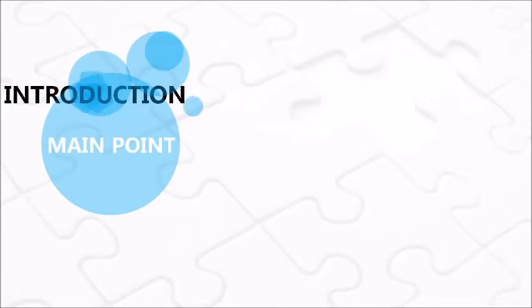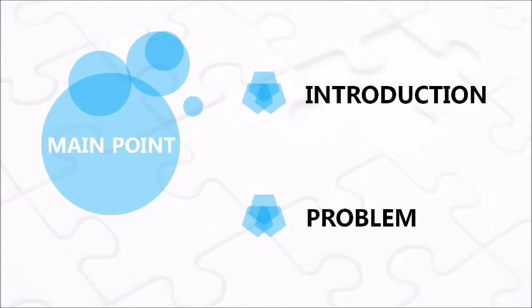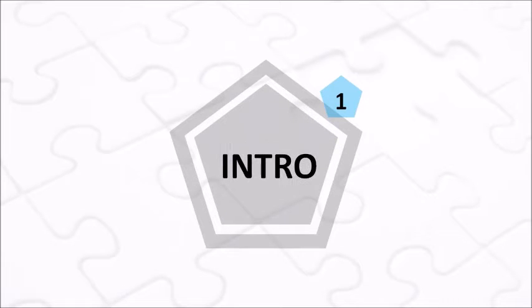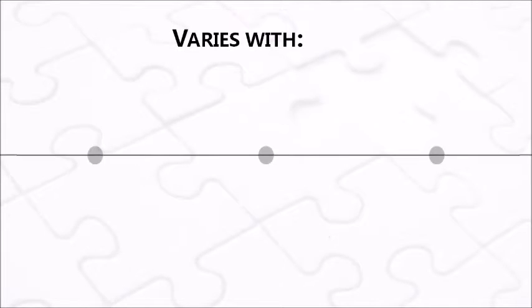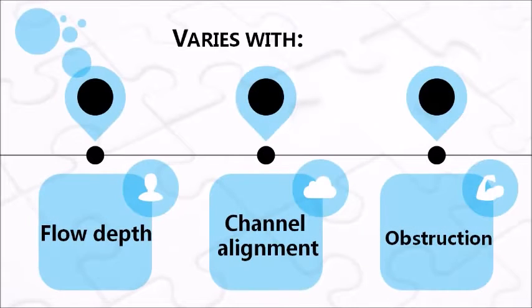I will talk about the introduction and the problem we met in our Manning's roughness coefficient experiment. Manning's roughness coefficient is an important characteristic in hydraulics, especially in channel flows. The goal of this experiment was to find how this characteristic varies with flow depth, channel alignment, and the degree of obstructions.